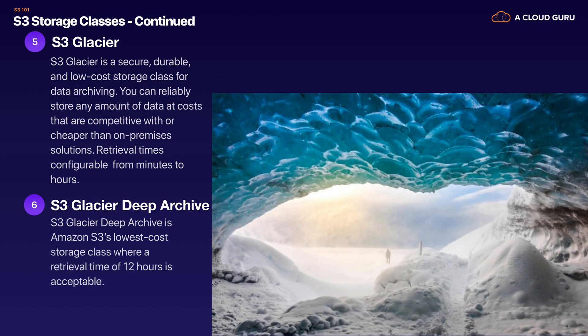We then have Glacier, which comes in two flavors: S3 Glacier and S3 Glacier Deep Archive. Glacier is basically for data archiving — if you have to hold onto data for seven years due to federal regulations, for example. You can store any amount of data and it's very cheap. Retrieval times are configurable from minutes to hours. With Glacier Deep Archive, the lowest cost storage class, the retrieval time is 12 hours.